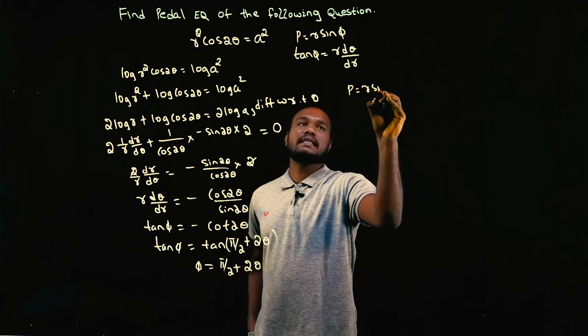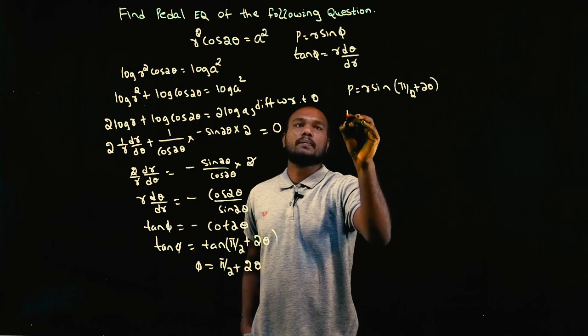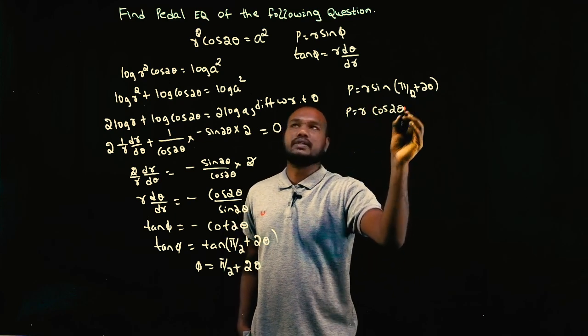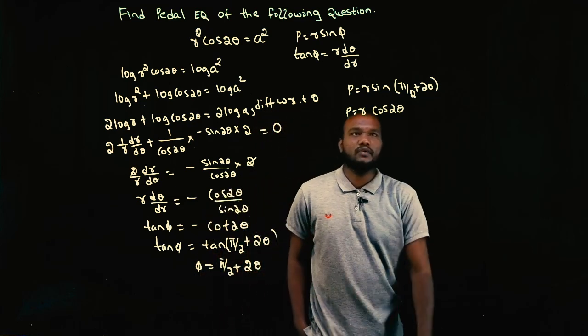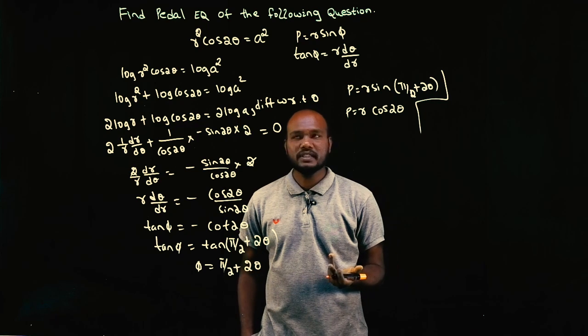Phi equals what? Pi by 2 plus 2 theta. So P equals R sine, in place of phi we have to substitute pi by 2 plus 2 theta. So P equals R sine of what? 90 degrees minus this is what? Cos 2 theta. Do we have a cos 2 theta? We have to eliminate theta entirely in a pedal equation, right? Pedal equation is an equation where there is no thetas.